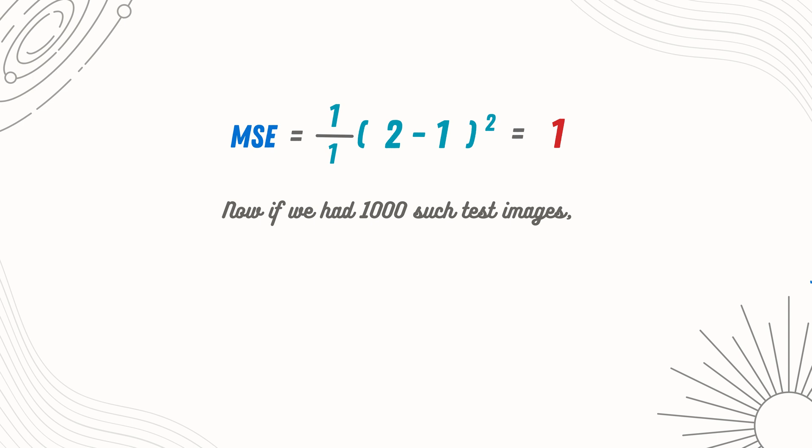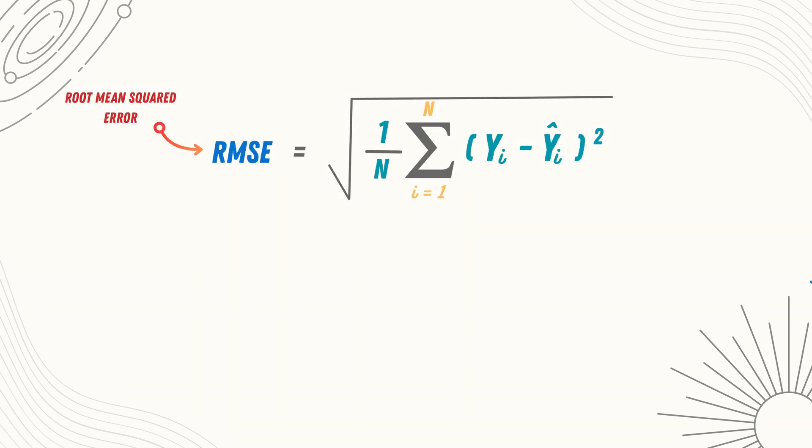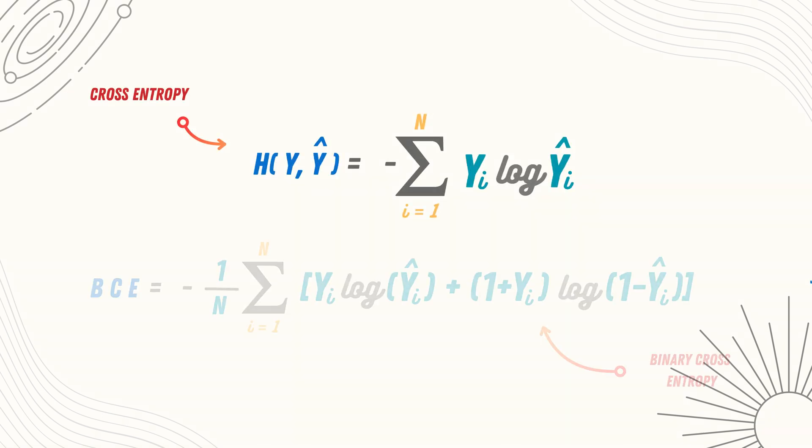Then our MSE would be 1 divided by 1 into 2 minus 1 squared. Now, if we had 1000 of such cat and dog images, then the error would be 1 by 1000 into the sum of all those squared errors. This same idea extends to other loss functions. Some other examples of loss functions are root mean squared error, mean absolute error, cross entropy, binary cross entropy.